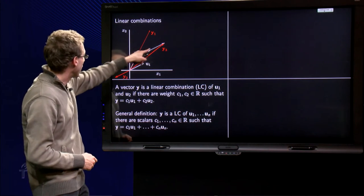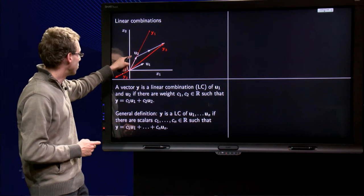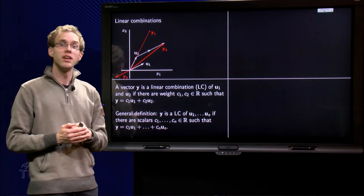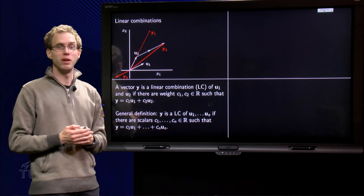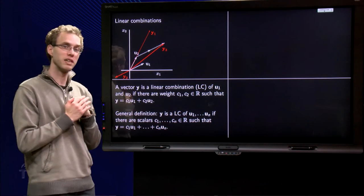And if we look at y3, for example, we get y3 if we take 1 times u2 plus 2 times u1. So that means that y3 is also a linear combination of u1 and u2, and the weights are 2 and 1 respectively.